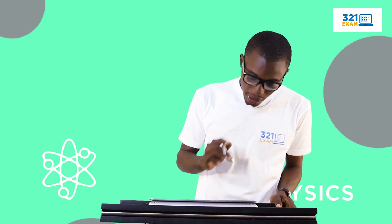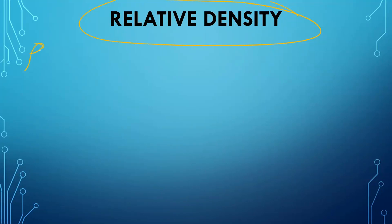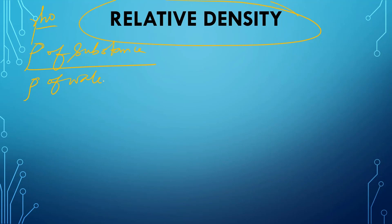Now we go to relative density. Relative density is defined as the density of a substance — represented by rho — divided by the density of water. The units cancel, so the relative density has no units as it is only a ratio.